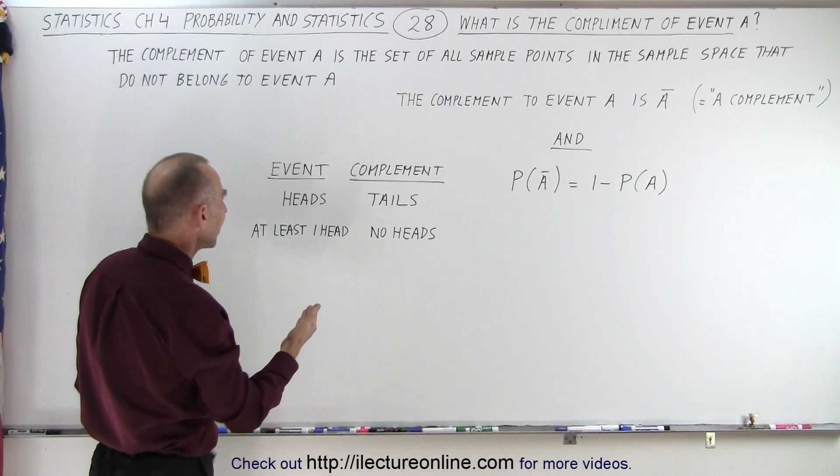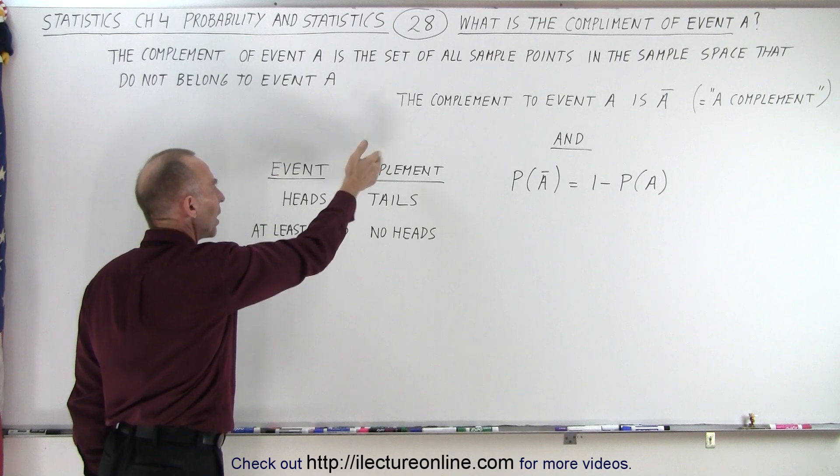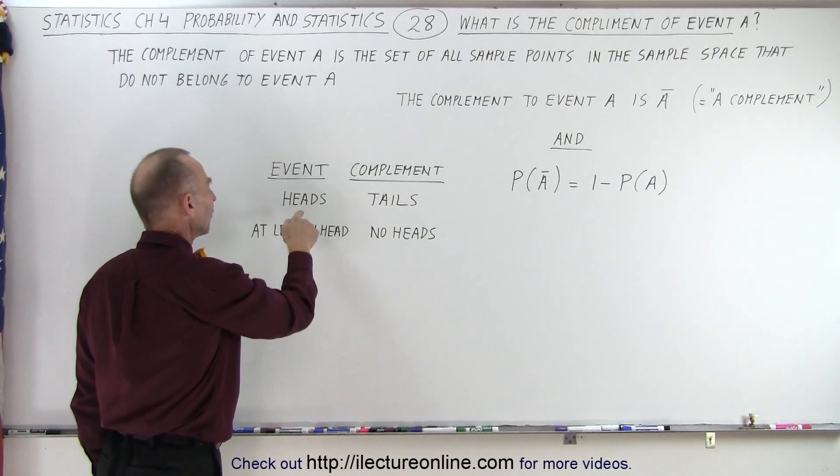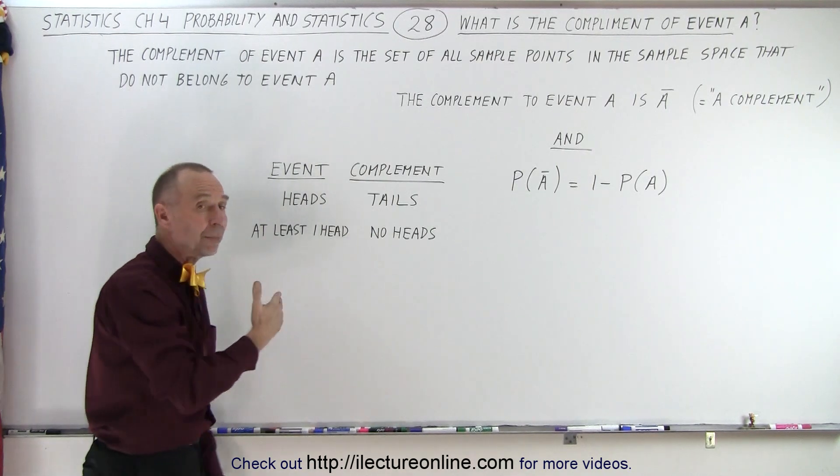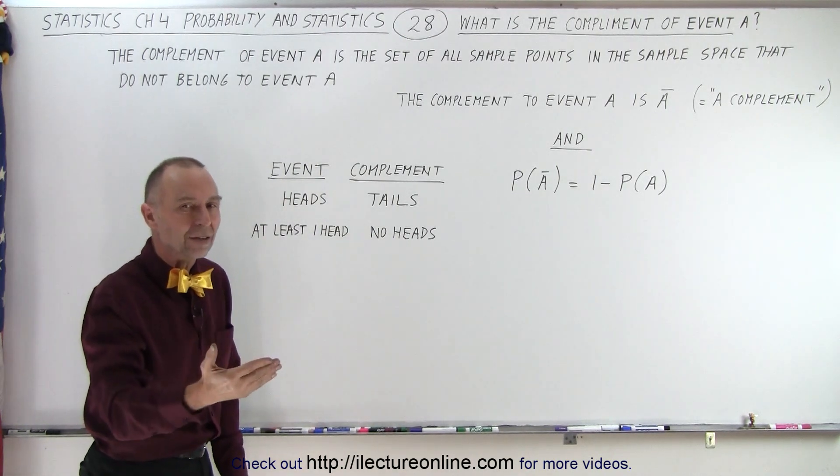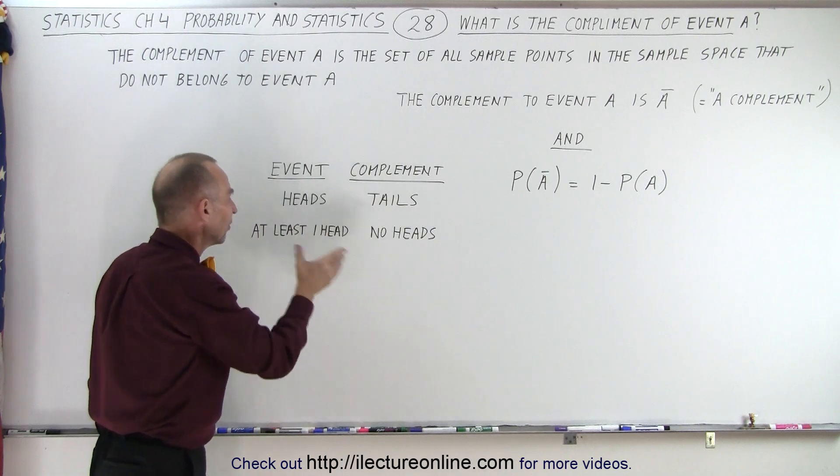So if we talk about certain events happening, what is the complement of that event? In the case of heads, the complement would be tails. In the case of at least one head, the complement would be no heads. So it's everything but that.